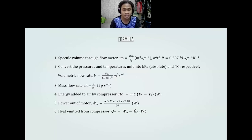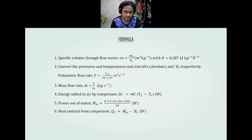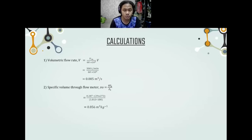The volumetric flow rate equals V_in over 60 times 10^(-3) cubic meters per second. Number three is mass flow rate. Number four is energy added to air by compressor. Number five is power output of motor. Number six is heat emitted from the compressor. The calculated volumetric flow rate V equals V_in over 60 times 10^(-3), giving 0.005 cubic meters per second.